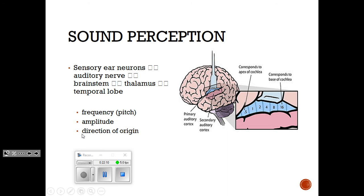In the primary area where auditory information is processed in your temporal lobe, there's a little map — just like there's a map on your motor cortex and sensory cortex. Each part of that section of the temporal lobe is associated with a different portion of the cochlea, so different parts of the cochlea activate different parts of the brain, and you perceive different pitches of sound.